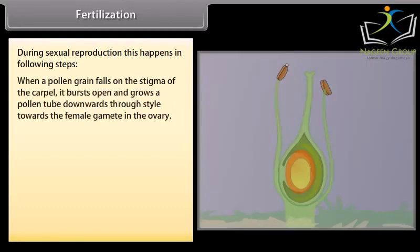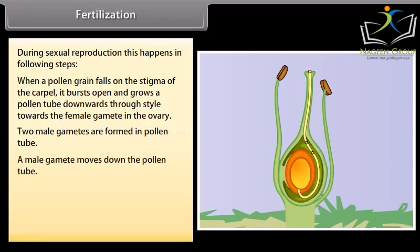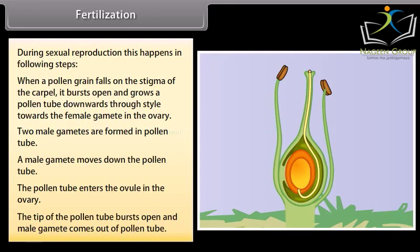When a pollen grain falls on the stigma of the carpel, it bursts open and grows a pollen tube downwards through style towards the female gamete in the ovary. Two male gametes are formed in pollen tube. A male gamete moves down the pollen tube. The pollen tube enters the ovule in the ovary. The tip of the pollen tube bursts open and male gamete comes out of the pollen tube.